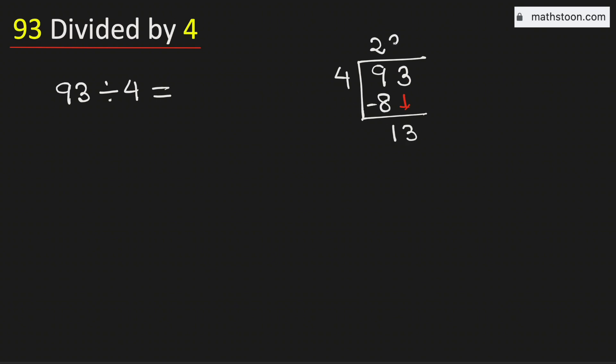Now 4 times 3 is 12. Subtract, we get 1. 1 is less than 4, but we don't have any number to bring down here.